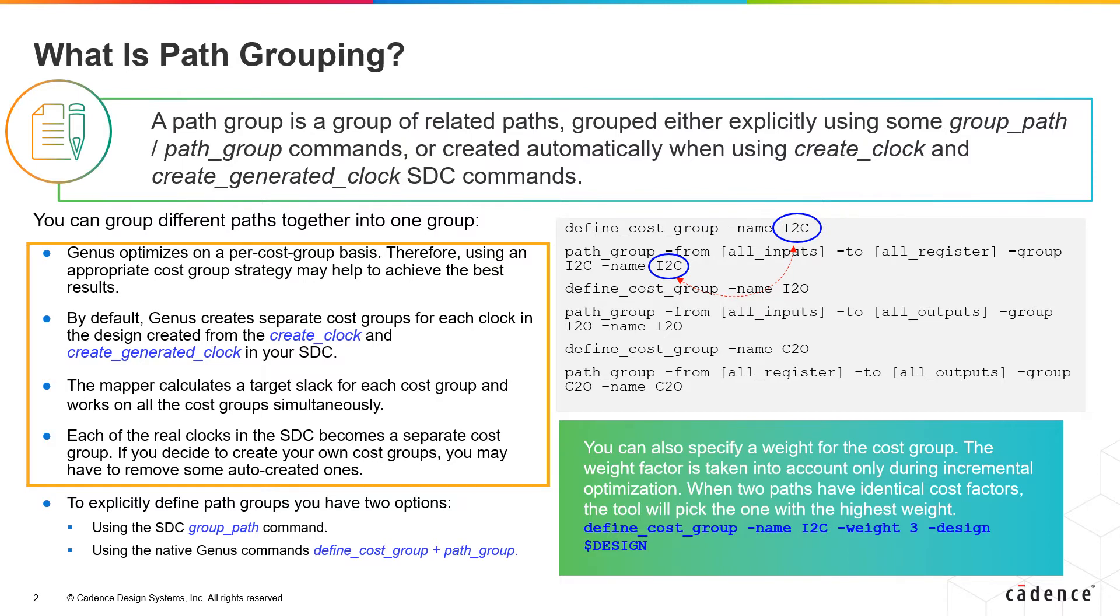So basically, cost group is a set of critical paths to which you can apply weights or priorities that the optimizer will recognize. Paths which are assigned to the cost group are called path groups. So path group is a group of related paths, either grouped by define clock command or by using the command path_group.